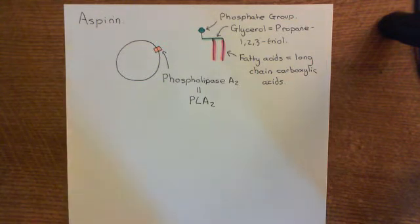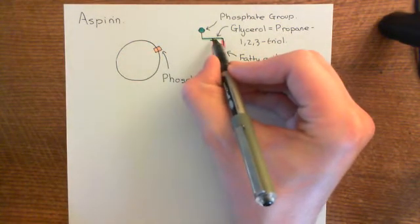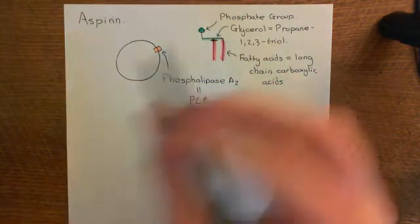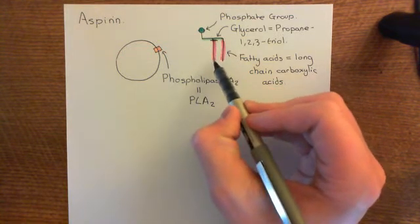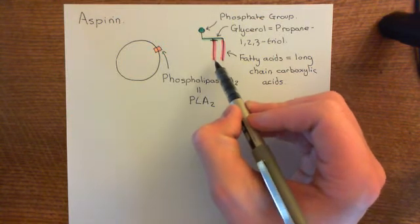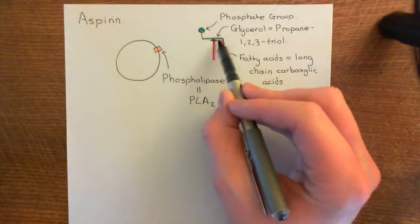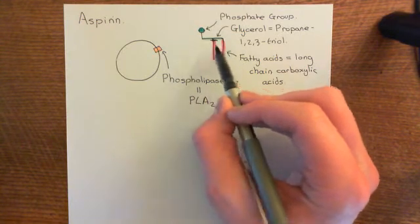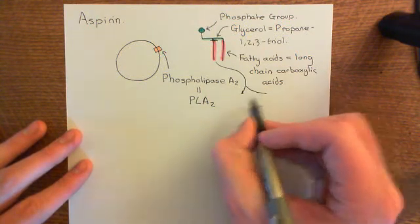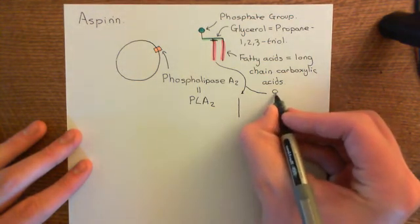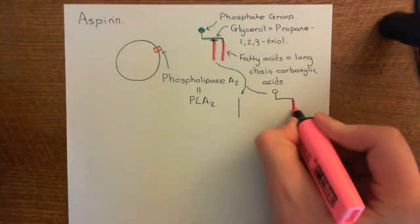What is phospholipase A2 going to do? Basically, it's going to cleave the bond between the alcohol group of the second carbon of the glycerol molecule and the carboxylic acid group of the fatty acid that is in position 2. This is why it's called phospholipase A2 — it always cleaves this second bond of the phospholipid. You're going to cleave this off and get two molecules: your free fatty acid, and then what's left — the glycerol molecule with one fatty acid still bound and the phosphate group still bound.